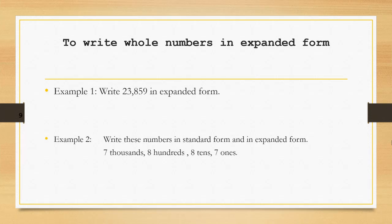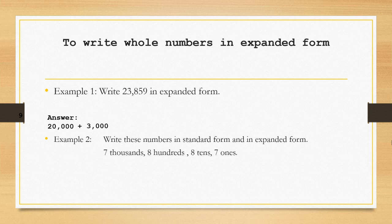Next, to write whole numbers in expanded form. For example, we're going to write 23,859 in expanded form. The solution will be 20,000 plus 3,000 plus 800 plus 50 plus 9.